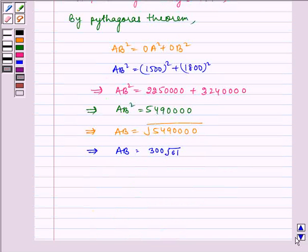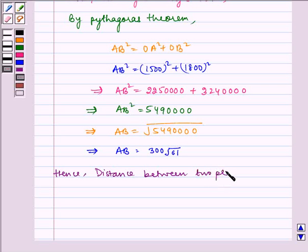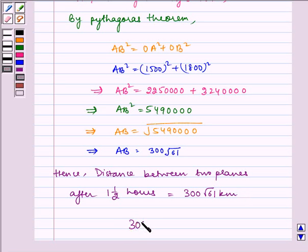Hence, the distance between two planes after one and a half hours is equal to 300 root 61 km. Hence, the required answer is 300 root 61 km.